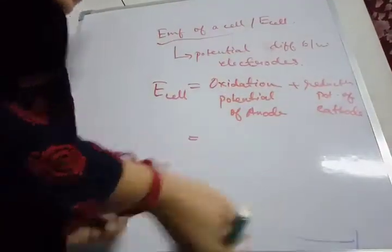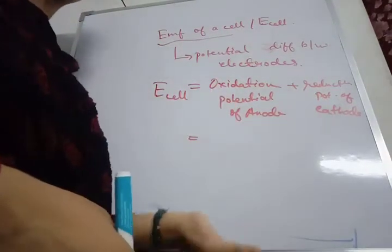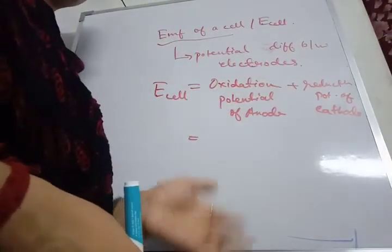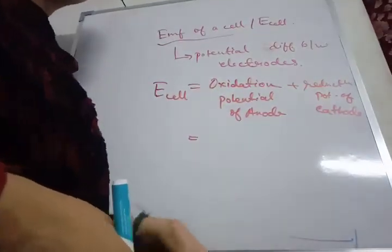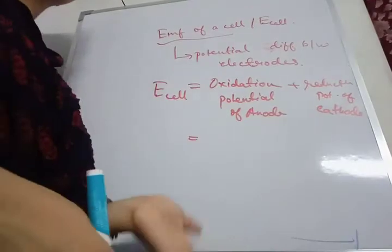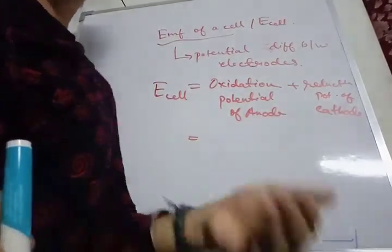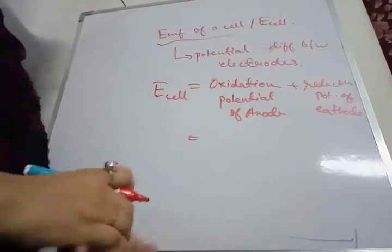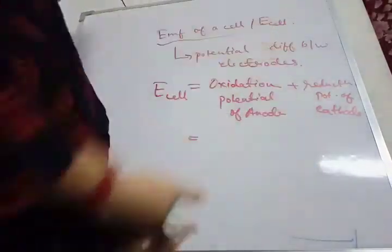In the setup, at the anode, oxidation occurs, so the anode has an excess of electrons — meaning the anode is the electrode at lower potential. The cathode has a deficiency of electrons, so the cathode is the electrode at higher potential. That's why electrons flow from anode to cathode, and current flows in the opposite direction, from cathode to anode. The potential we get is the EMF of a cell.